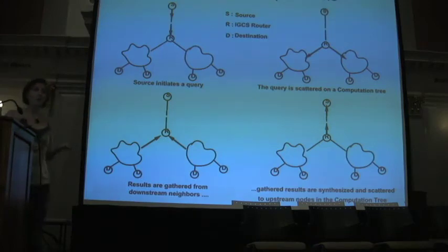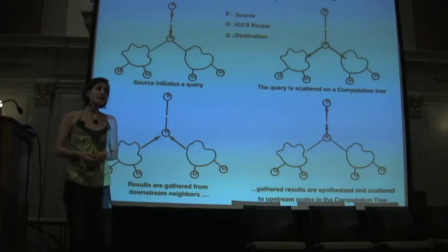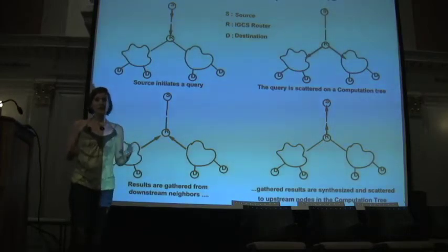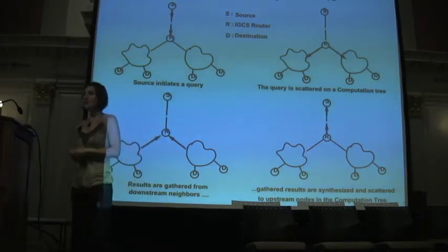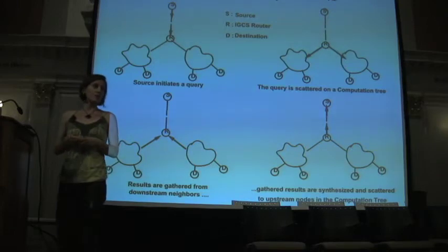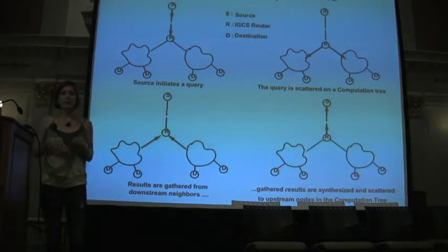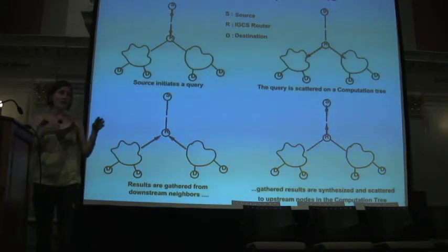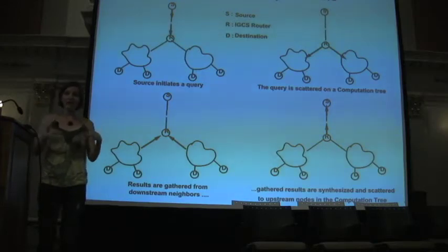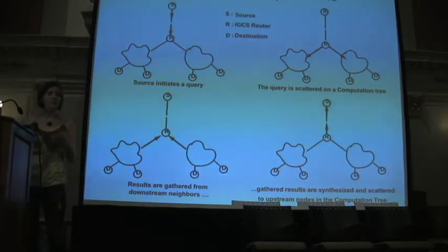One thing that we're looking into doing is what we're calling distributed computation. The idea is that you have this network and you can retrieve information from it that is not possible to retrieve from the capitalized internet. You can't just go search for where the nearest parking spot is by putting that into Google, but if you're able to submit that query to your local environment, then maybe you can get information back from each device, aggregate it on its way back to you, and give yourself some kind of probabilistic answer.